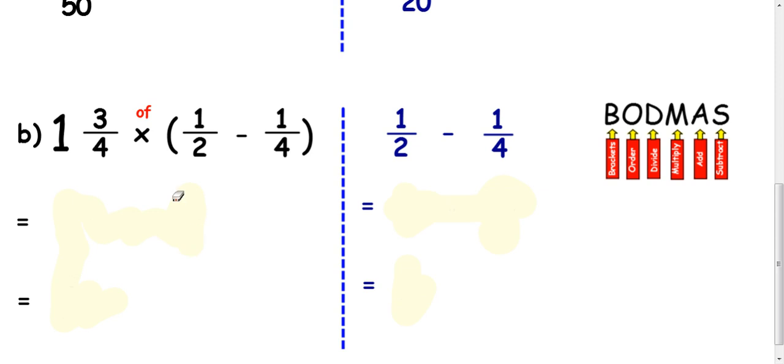Okay, another example here just to finish off. Now it's the same principles here. I want to do a bit of BODMAS. I've got a bracket here, so I want to do that first. So I'm going to be doing the half take away the quarter.